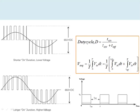A shorter on-duration generates lower voltage and a longer on-duration generates higher voltage. Within a fixed time period T — which depends on the frequency — if the on-time is more, the average voltage is high; if the on-time is less, the average voltage is low. In this way, PWM controls both voltage and frequency in the VFD.